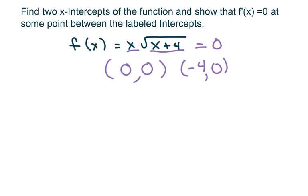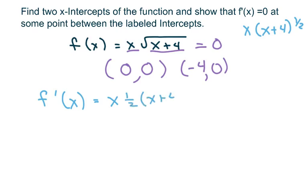The next step is to differentiate this. Using my product rule, I'm going to write down my x, and also write this as x times x plus four to the one-half. So that's going to be one-half times x plus four to the negative one-half. And then for the second piece I write it down, so that's going to be plus the derivative of x, which is one.